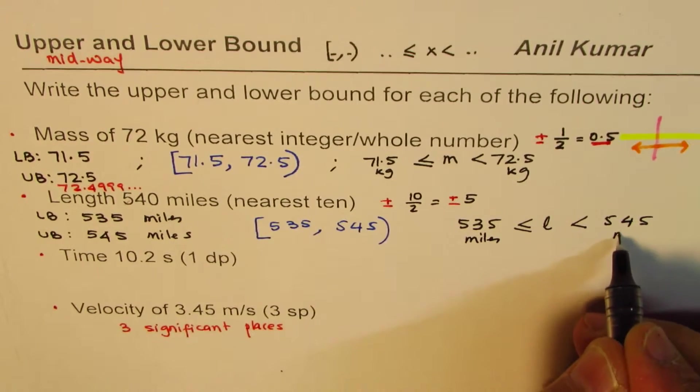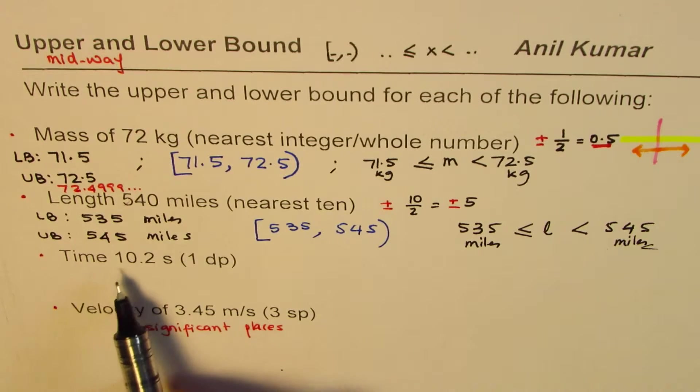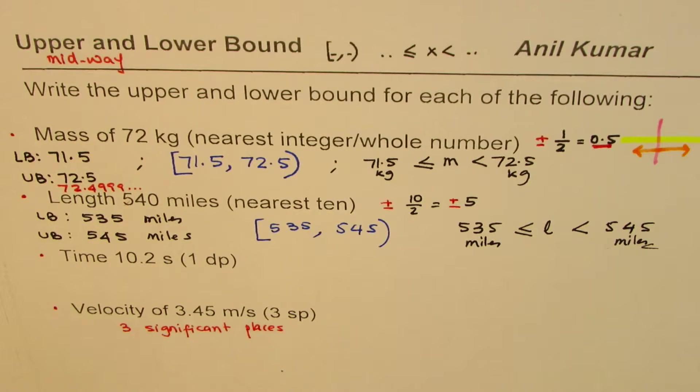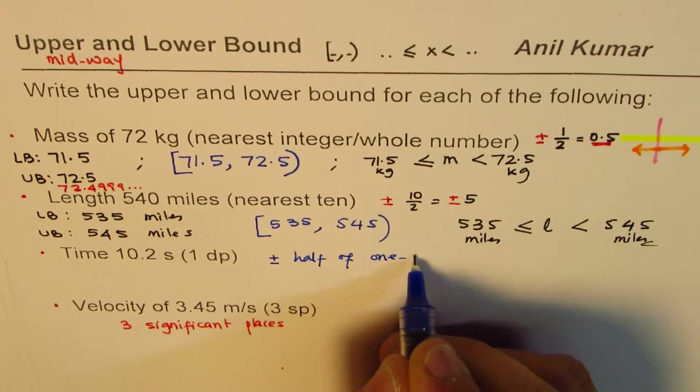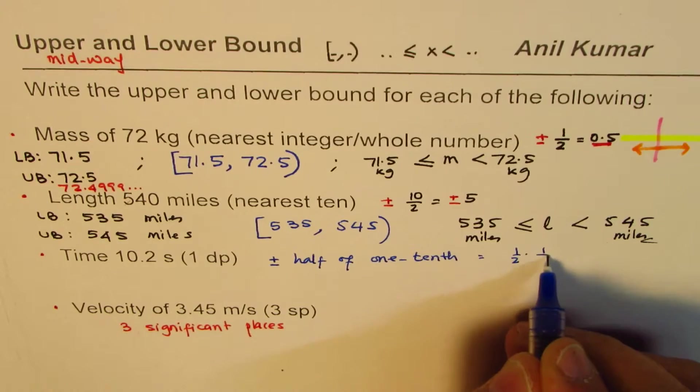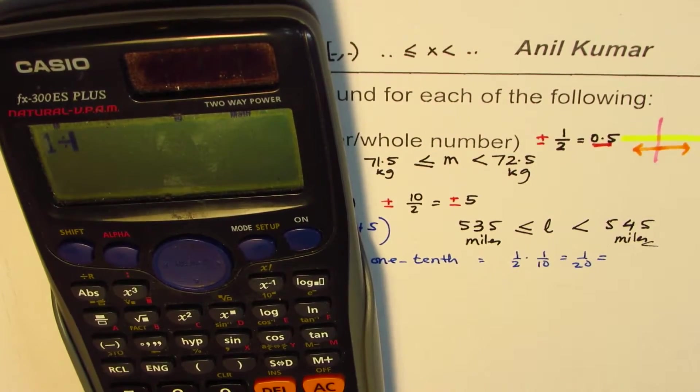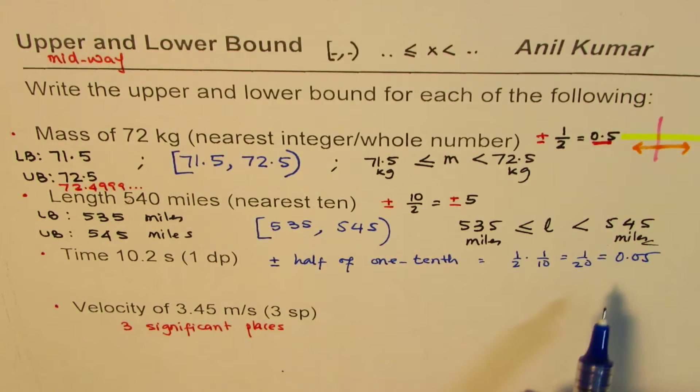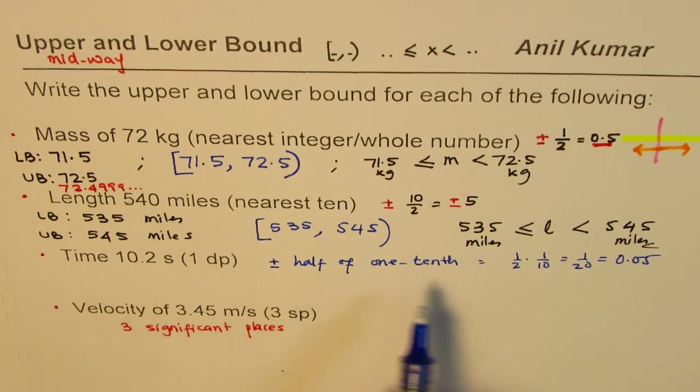Let's get into decimal places. Time is 10.2 seconds, that is one decimal place here. One decimal means one tenth. You do half of one tenth. What do you have to do here is add and subtract half of one tenth. That is to say half of one tenth, that means 1 over 20. If you do 1 divided by 20, this is 0.05. So you have to add and subtract 0.05 to 10.2 to get your value.